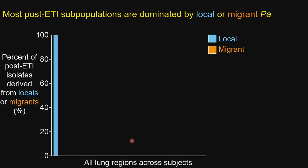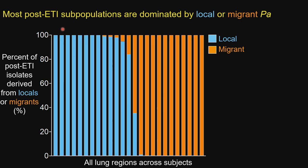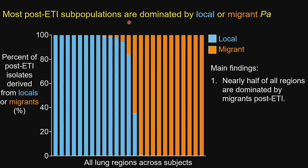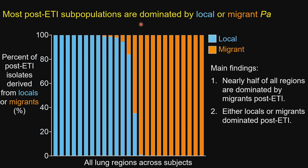To summarize across all subjects, I classify regions simply as locals or migrants. Nearly half of the lung regions are dominated by migrants after ETI, suggesting migration contributes to that widespread lung infection found after ETI. Additionally, there were very few regions that were a mixture between locals and migrants — either locals or migrants dominated post-ETI. We don't fully understand why this is happening yet, but we found it really interesting nonetheless.